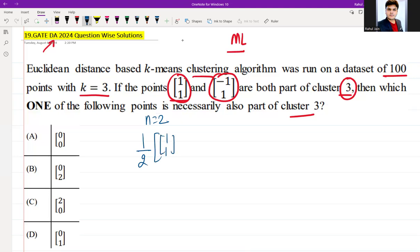Now if you calculate, 1/2 times [(1,1) + (-1,1)], that is 1/2 and it is 1 minus 1, 1 plus 1, so ultimately it will lead to 1/2 times (0,2), and that is nothing but (0,1).